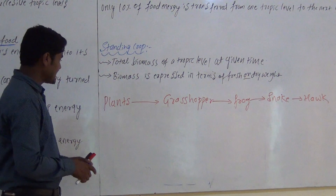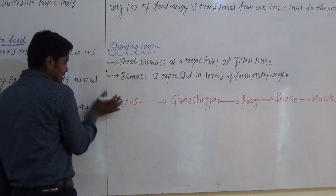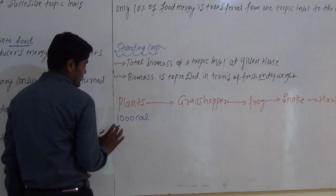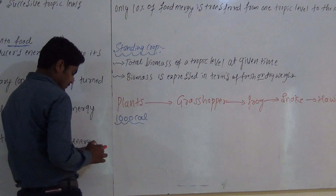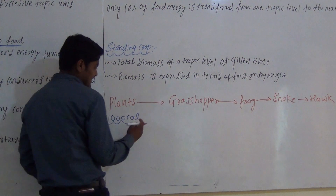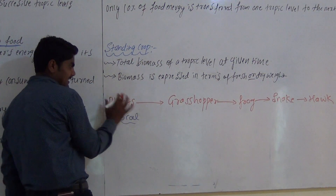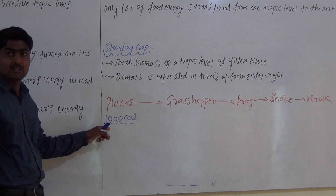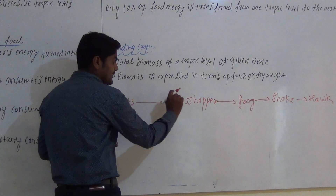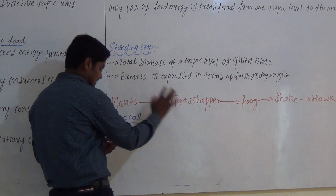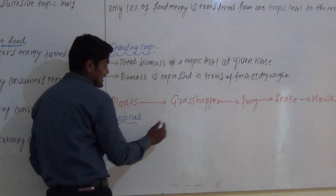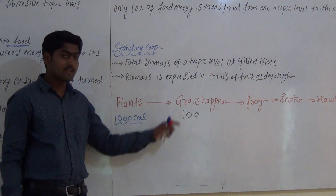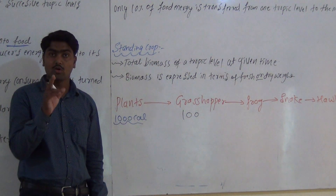The next concept: this plant produces 1000 calories of food. Whenever we move to the next Trophic Level, only 10% of energy is passed on. So from 1000 calories, the next level gets 100 calories, the next gets 10 calories, and the next gets just 1 calorie. This is 10% of the previous level.